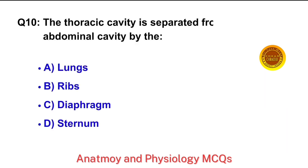Question No. 10. The thoracic cavity is separated from the abdominal cavity by the — the right answer is option C: Diaphragm.